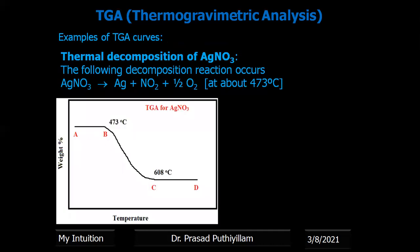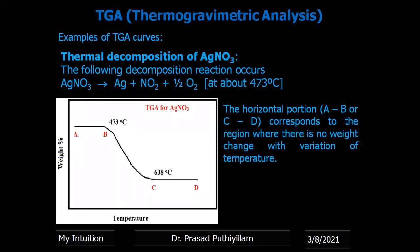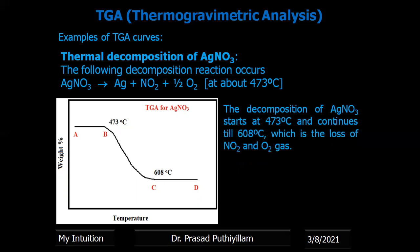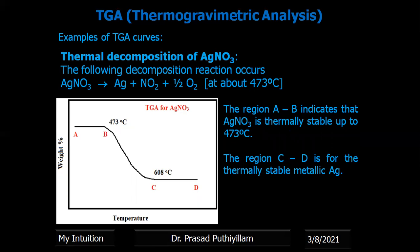An example is the decomposition of silver nitrate (AgNO₃). Silver nitrate decomposes as: AgNO₃ → Ag⁺ + NO₂ + ½O₂. This reaction starts at around 473 degrees Celsius. The horizontal portions AB and CD represent regions where there is no change in mass on increasing temperature. Region BC represents the procedural decomposition temperature of AgNO₃ from 473 to 608 degrees Celsius, indicating loss of NO₂ and oxygen gas. Region AB shows silver nitrate is thermally stable up to 473°C, and region CD represents the thermal stability of metallic silver.